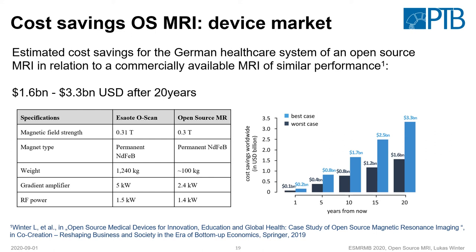Let me give you an example of how an open source MR scanner can impact the public healthcare system. Here is device market data taken from the German healthcare system. We compared a commercially available MR scanner with an open source device of similar technical performance. From our experience of hardware development, we can roughly estimate material costs and assembly costs, then replace one with the other and project that onto 20 years. You can see that after 20 years you can save a lot of money for the public healthcare system, and the idea is that if we invest some of this money now into open source MR development, we can save a lot more later — a very sustainable approach.